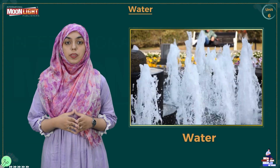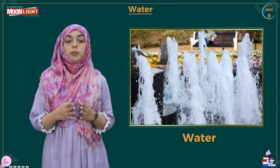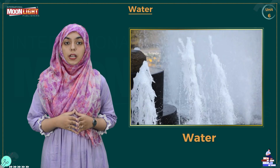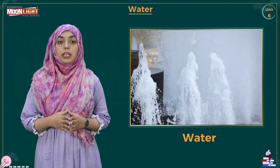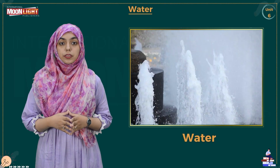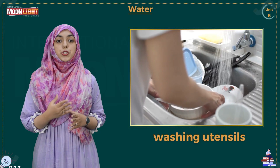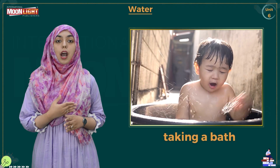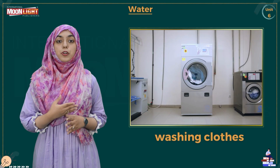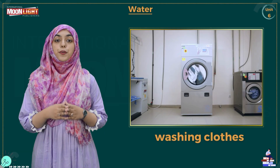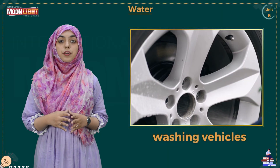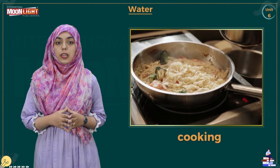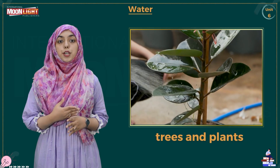Use of water. Water is used in our daily lives. Water is used for washing, cooking, and washing hands. Now I will show you some pictures. Number one is washing utensils. Number two is taking a bath. Number three is washing clothes. Number four is washing vehicles. Number five is cooking. And the last picture shows trees and plants.